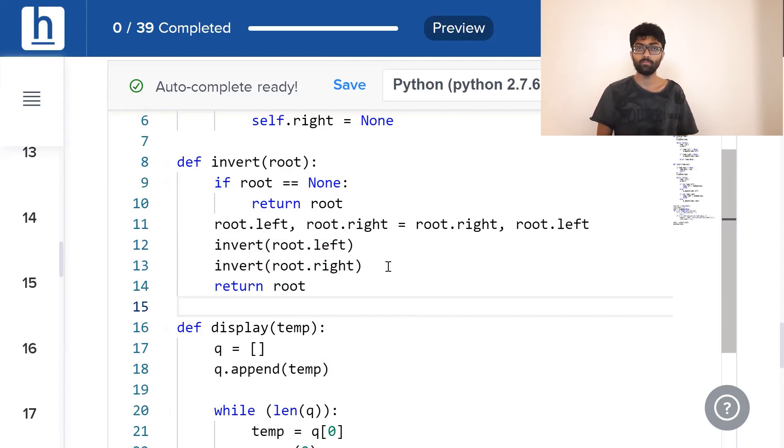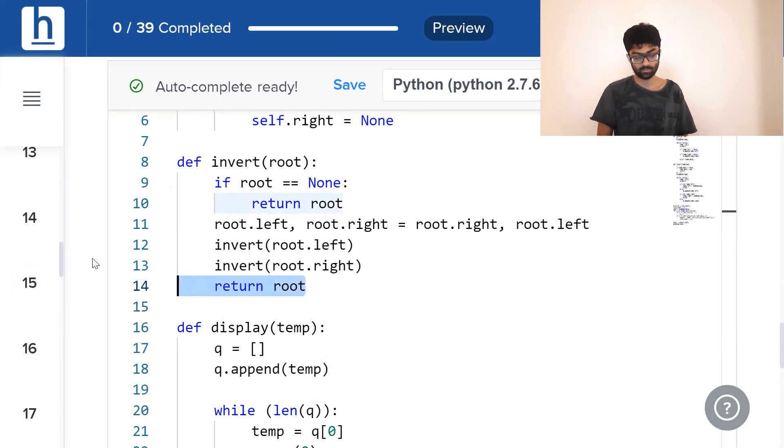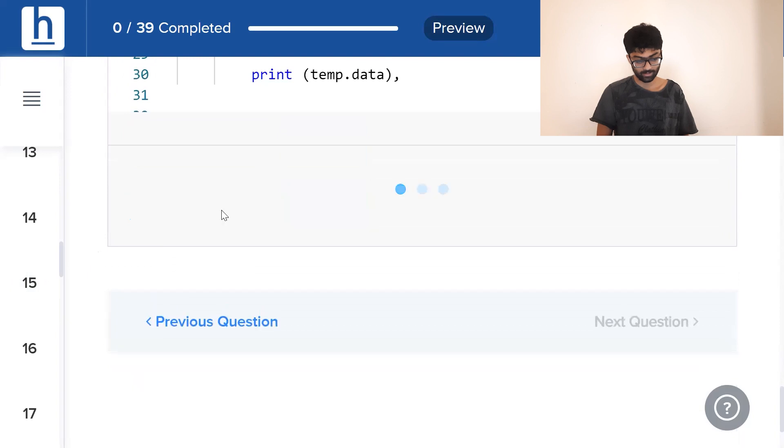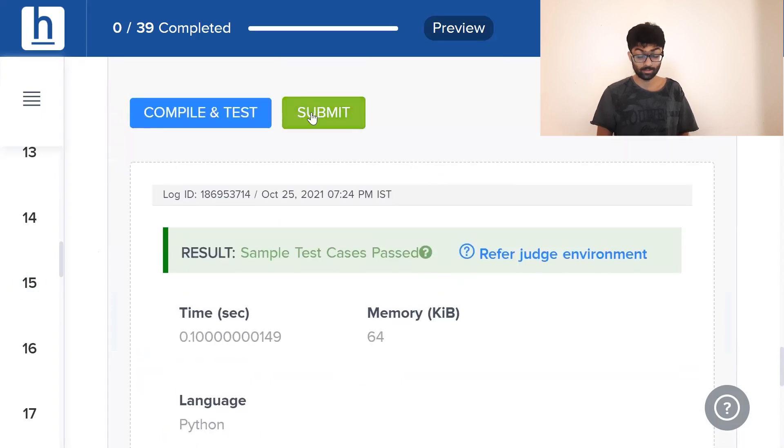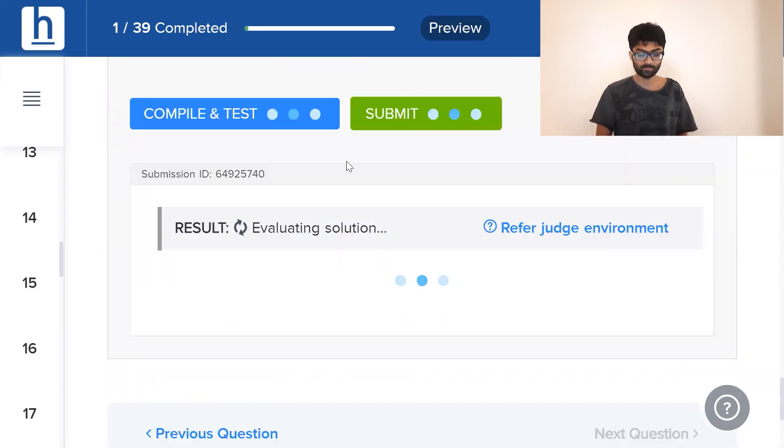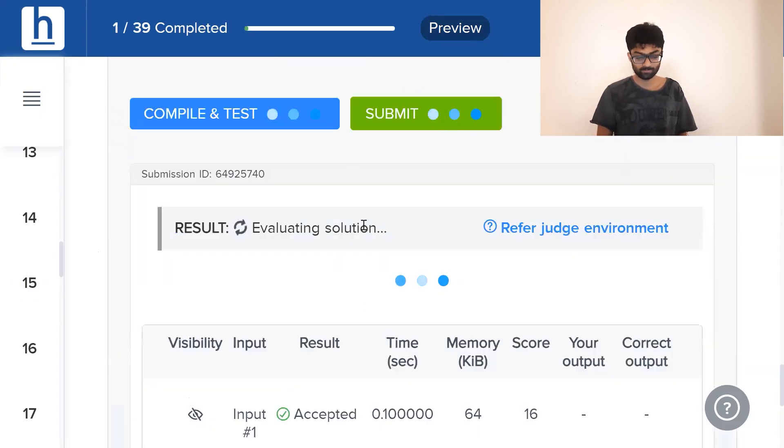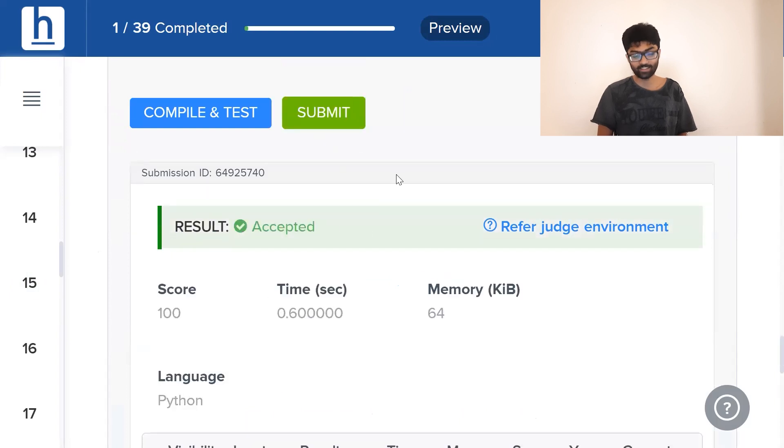Once we return root, we will get a fully inverted binary tree. Let's see if this works. Compile and test. Gives us that warm fuzzy feeling but there's that little ambiguous question mark. But once we hit submit, we get the green tick of satisfaction.